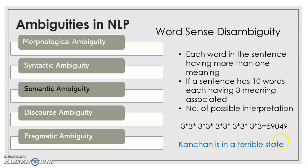So 'state' can mean a mental state, or a region like Maharashtra or Gujarat. One interpretation is: she is living in a terrible geographical region. Another interpretation is: she is in a mentally terrible state. So one word having two meanings produces two different sentences and two senses. If there were many meanings for each word, there would be many more interpretations. Semantic ambiguity deals with word sense disambiguity.